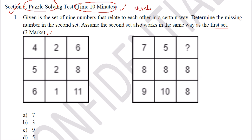This type is called a number puzzle. The logic either works from left to right or from top to bottom. I'm going to add all 3 numbers: 4 plus 2 is 6, and 6 plus 6 is 12. Then left to right again: 5 plus 2 is 7, 7 plus 8 is 15. Then: 6 plus 1 is 7, and 7 plus 11 is 18. So the logic could be from top to bottom or left to right.